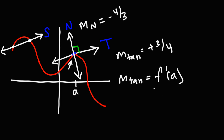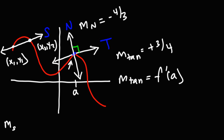Once you have the slope of the tangent line, you can easily find the slope of the normal line — flip the fraction and change the sign. Now, if you want to calculate the slope of the secant line, you've done this in algebra. All you need is the two points, x1, y1, and x2 and y2. The slope of the secant line is going to be the change in y, which is y2 minus y1, divided by the change in x, x2 minus x1.